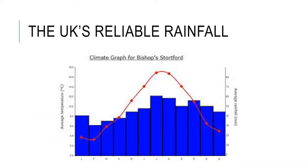I said we have a temperate climate in the UK — we don't really have extremes. The red line on the climate graph indicates we have a spring, summer, autumn, and winter, with temperatures highest around June, July, and August. The blue bars show rainfall distributed throughout the year — it's not like the savannah where there's no rainfall for nine months. We experience what we call reliable rainfall; it rains every single month, giving us a constant source of fresh water.